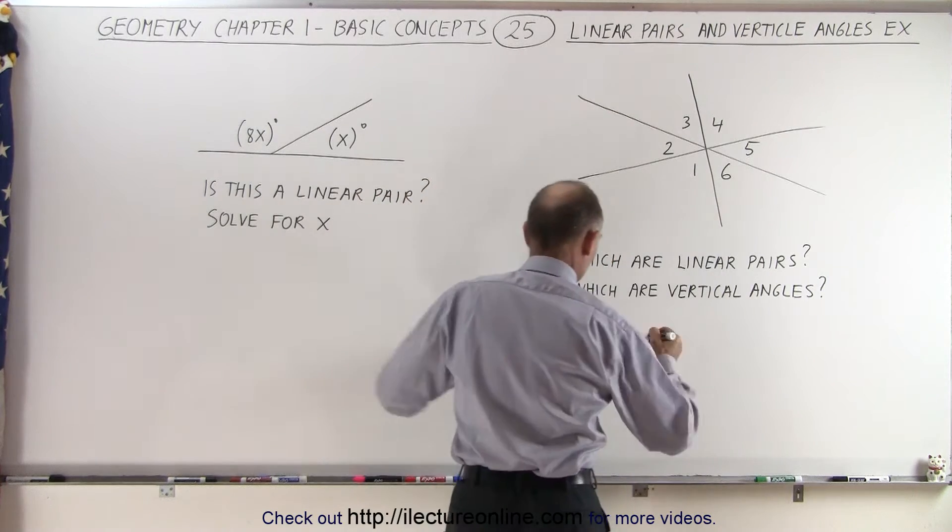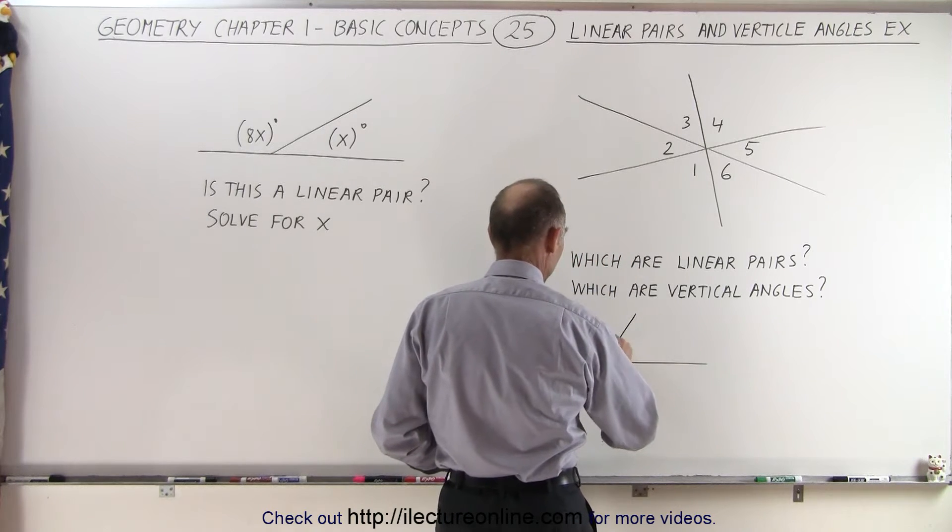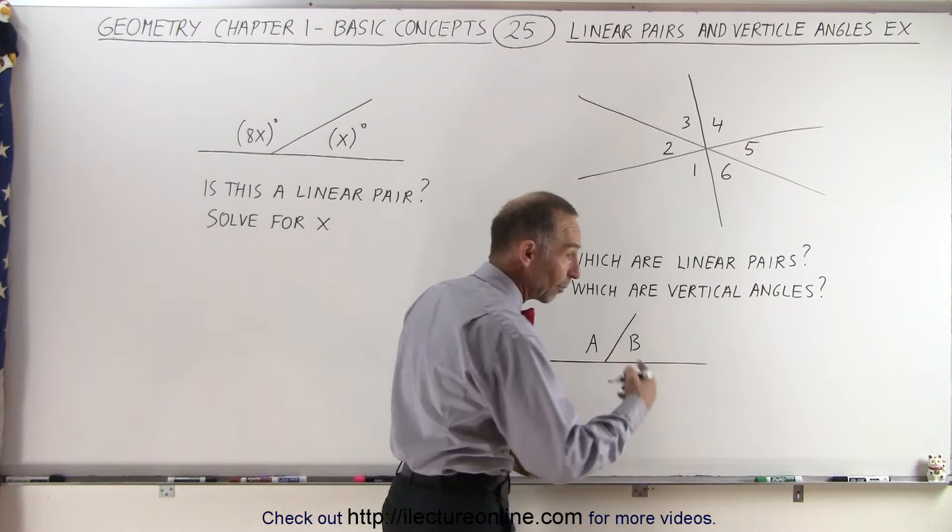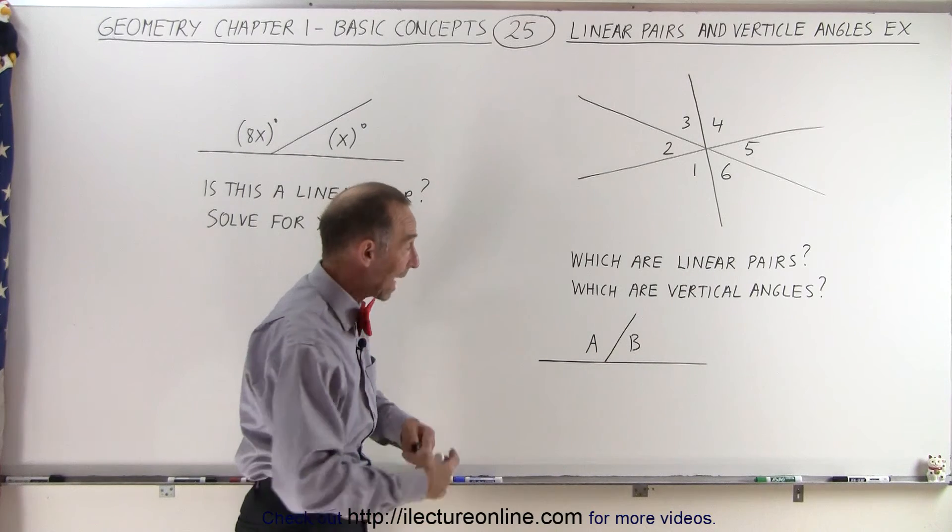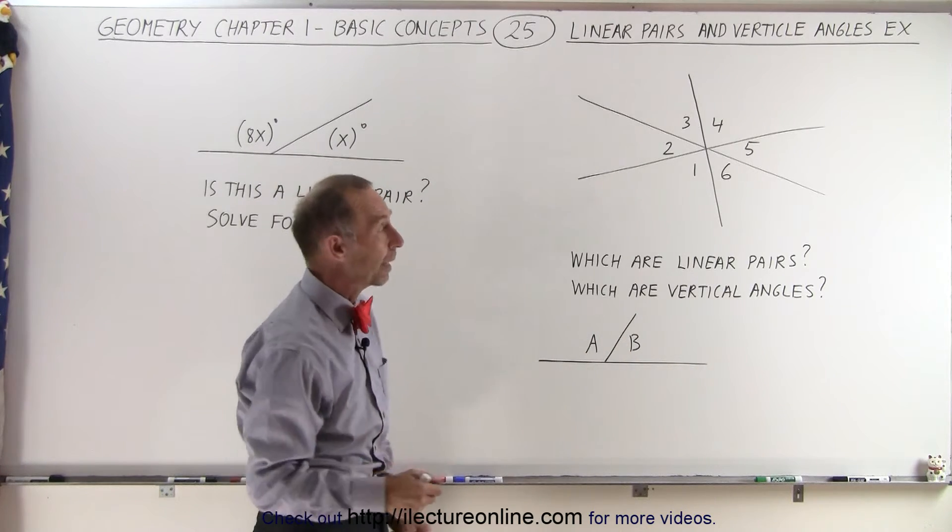For example, here's a good example of what a linear pair would look like. If this is angle A and this is angle B, you can clearly see that the sum of the measure of these two angles add up to 180 degrees, so A and B would be considered a linear pair.